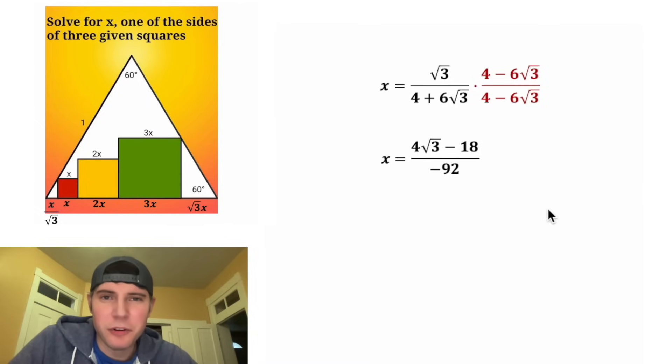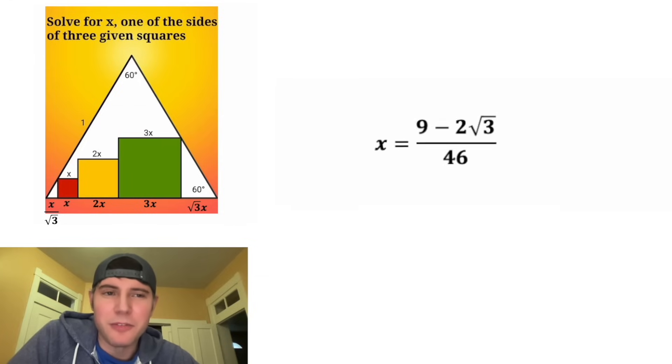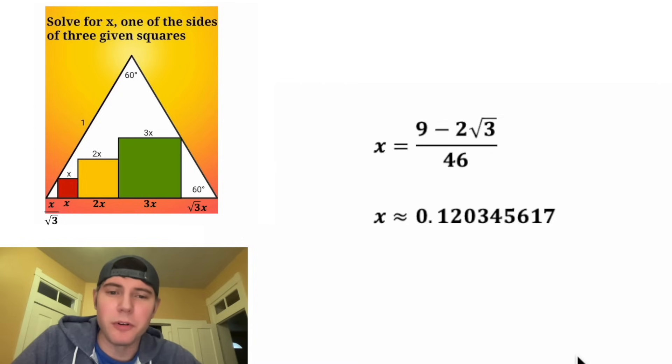And to simplify a little bit further, both top and bottom can be divided by negative 2. We have 4 divided by negative 2 and negative 18 divided by negative 2. That gives us negative 2 root 3 plus 9. And then the negative 92 divided by negative 2 is positive 46. And now we've rationalized the denominator for X. It's 9 minus 2 root 3 over 46. And that's approximately 0.120345617.